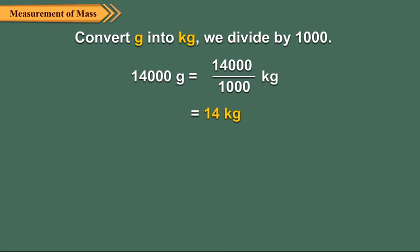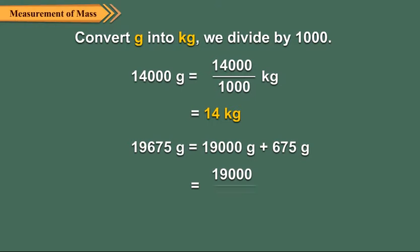And to express 19,675 gram as kilogram and gram, we write it as 19,000 gram plus 675 grams. Then, we divide 19,000 by 1000 to get 19 kilogram 675 grams.